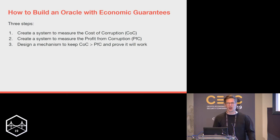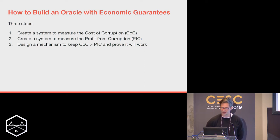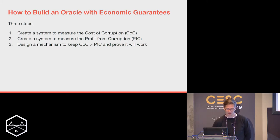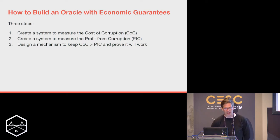At a high level we break the solution down into three steps: Step one — measure the Cost of Corruption. Step two — measure the Profit from Corruption and prove it's accurate. Then step three — design a mechanism to keep this inequality in check and prove it works.